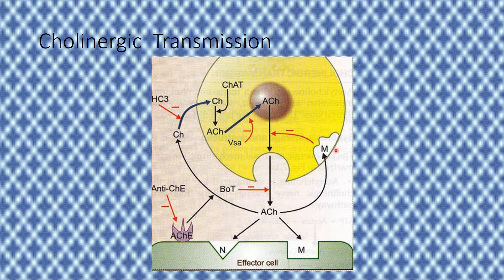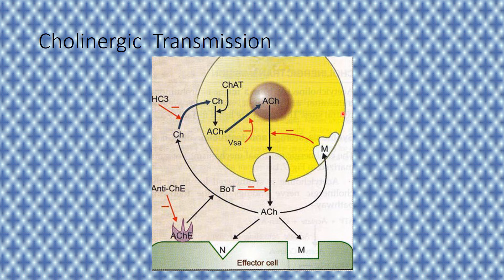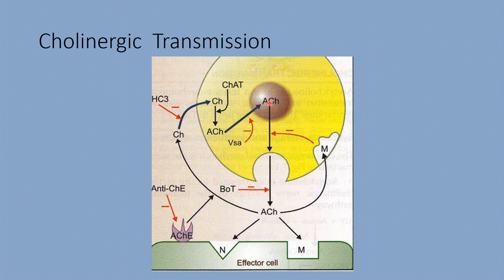When an action potential reaches the axon terminal, voltage-gated calcium channels open, leading to an influx of calcium. This calcium destabilizes the membrane of the vesicles and causes release of acetylcholine into the synapse. The membrane from which acetylcholine is released is called the pre-synaptic membrane, and the receiving side — which can be a target organ or the next neuron — is the post-synaptic membrane.